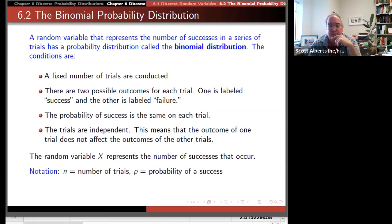In the next chapter we'll talk about chapter 6.2, the binomial distribution, which is a very particular discrete random case.